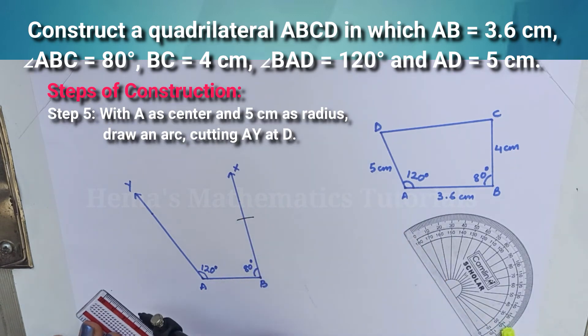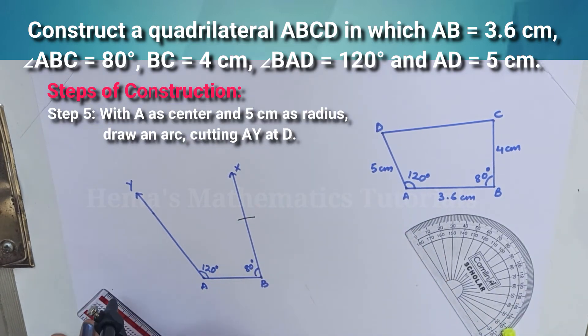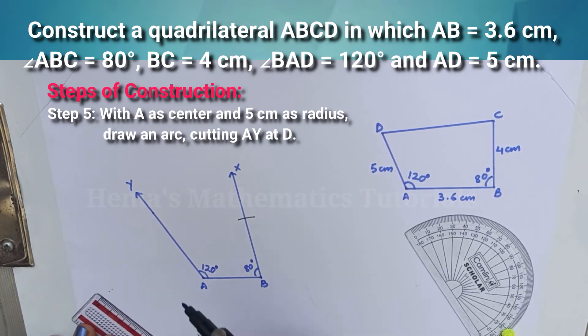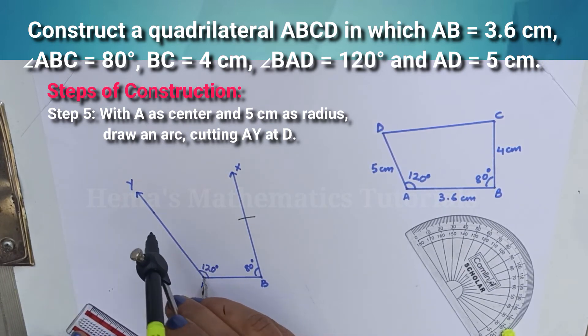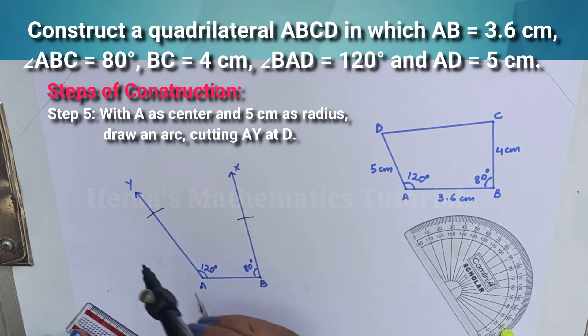Now, AD is equal to 5 cm. Open your compass equal to 5 cm. Place your compass at A and cut AY equal to 5 cm.